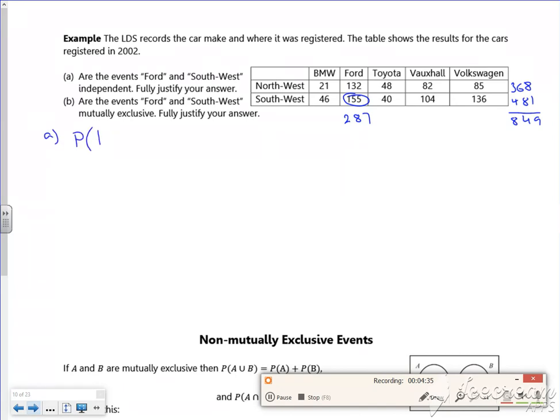Right, okay. So from the table, Ford and Southwest, because it's independent we're looking at, so Ford and Southwest is 155 out of 849. Way out of time now, so I'm going to stop it.